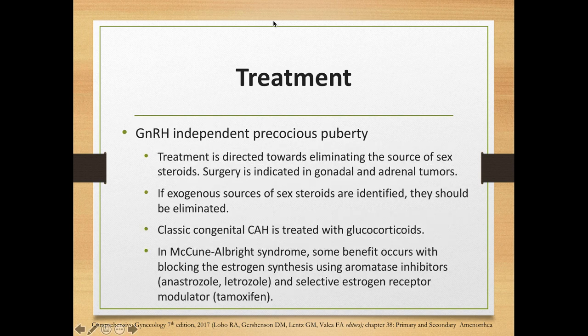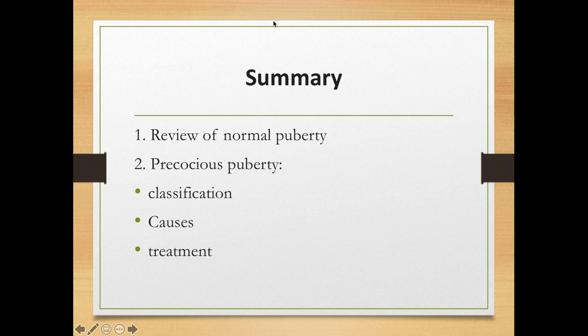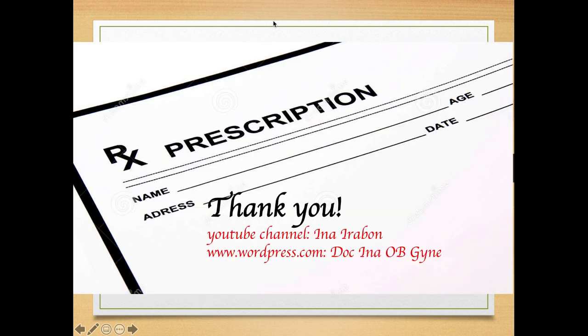For GnRH-independent precocious puberty, treatment is directed towards eliminating the source of sex steroids. Surgery is usually indicated for gonadal and adrenal tumors, and exogenous sources of sex steroids should be eliminated. Classic congenital adrenal hyperplasia is treated with glucocorticoids. For McCune-Albright syndrome, some benefit occurs with blocking estrogen synthesis using aromatase inhibitors such as anastrozole or letrozole, and with selective estrogen receptor modulators such as tamoxifen. In summary, we have discussed normal puberty and the classification, causes, and treatment of precocious puberty.